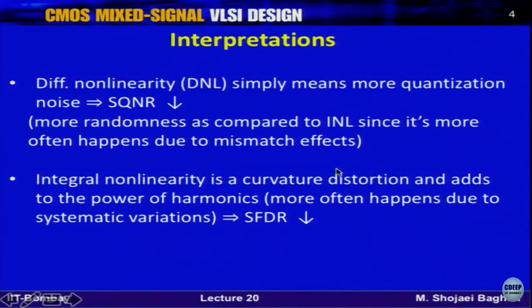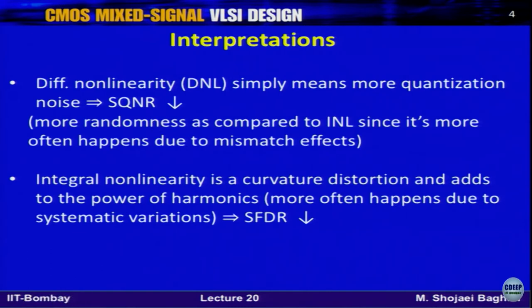This is a summary of those effects. Even harmonics were not written as a bullet item but can be added. The key takeaway is that effective SQNR reduces, or equivalently, SNR reduces when DNL is present.